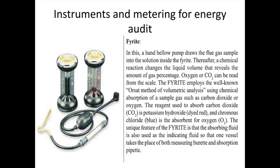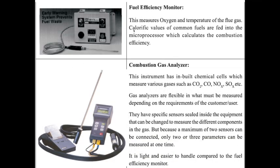Now, instrumentation and metering for energy audit. The first instrument is the flue gas analyzer, similar to the Orsat apparatus used in chemistry. It is used for measuring flue gas — specifically oxygen level and CO2 level, as well as the temperature of flue gas.